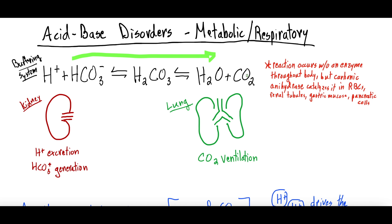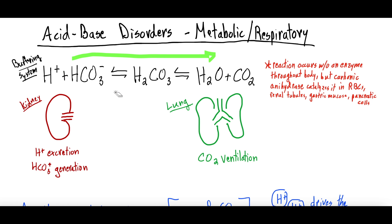Similarly, when there aren't enough hydrogen ions and you're at risk for alkalemia — because the solution is too basic — the reaction shifts the other way: the body takes CO₂ and water to form more hydrogen ions, again maintaining blood pH at normal so the body is neither acidemic nor alkalemic. But what happens when this system becomes too overwhelmed and can't keep up?